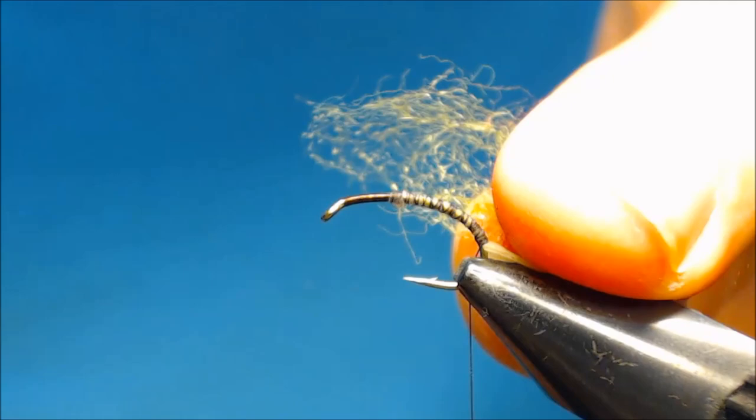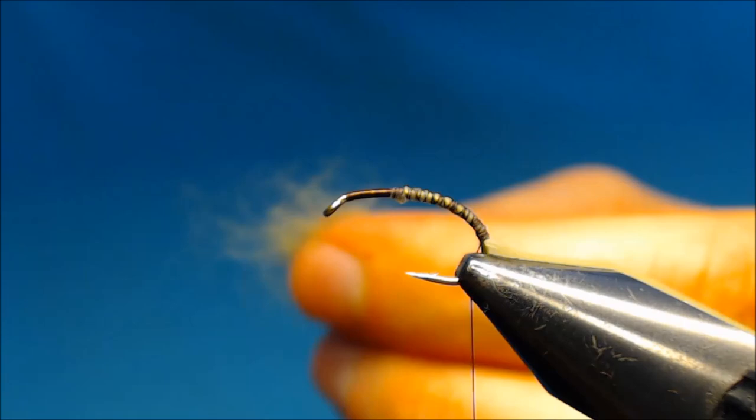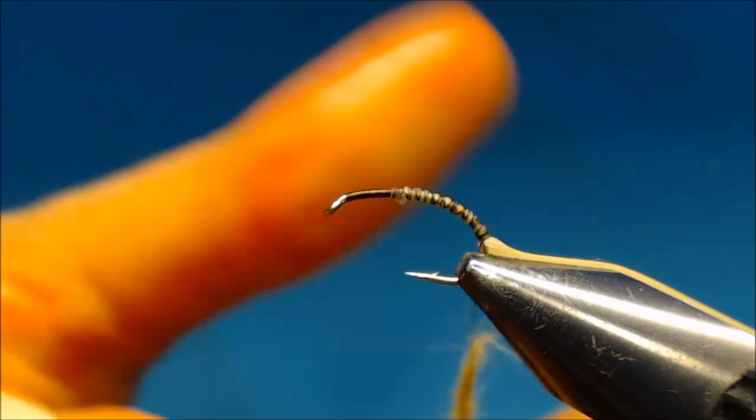This is from the SLF Masterclass. And I recently found out that the bright green has some UV strands in it. And I'll make a fairly thin dubbing noodle.